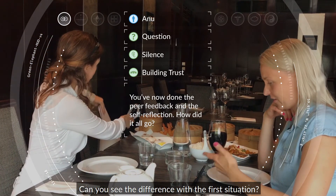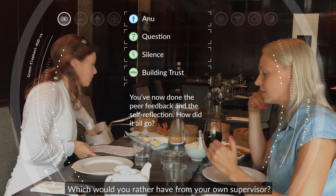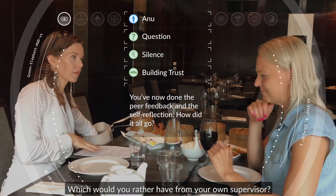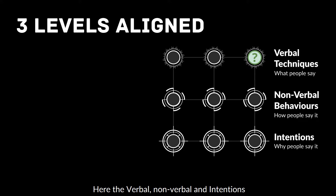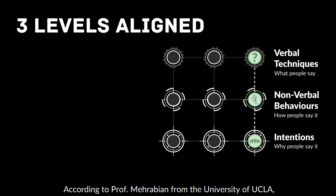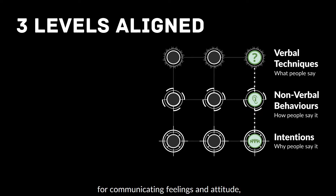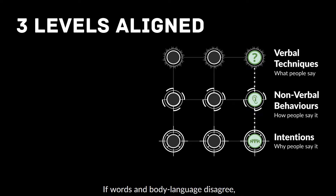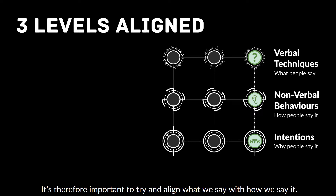Can you see the difference with the first situation? Which would you rather have from your own supervisor? Here, the verbal, non-verbal, and intentions are all the same colour. According to Professor Mehrabian from the University of UCLA, the non-verbal elements are particularly important for communicating feelings and attitude, especially when they are incongruent. If words and body language disagree, one tends to believe the body language. It's therefore important to try and align what we say with how we say it.